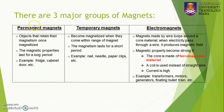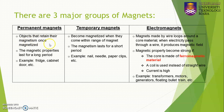For permanent magnets, we consider objects that retain their magnetism once magnetized — the magnetic properties last for a long period. For example, the magnet in your fridge or on your cabinet door is a permanent magnet, because it retains its magnetism forever.